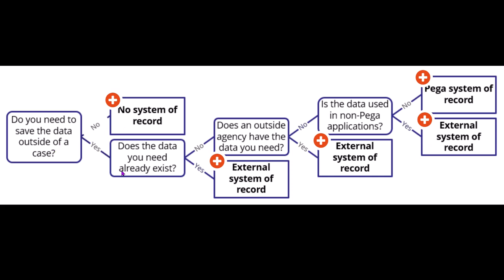You should create a system of record only when the data is needed outside of the case and is not available with any external system or third party agency. In such a case, you have two options: push the data to an existing external system of record, or maintain that system of record within your Pega environment itself.